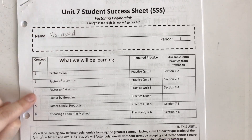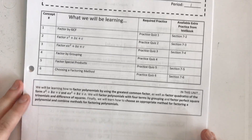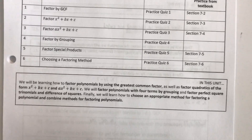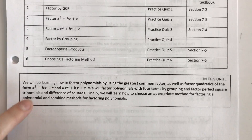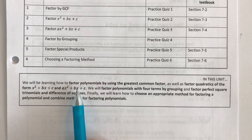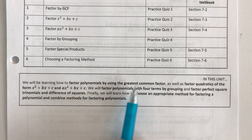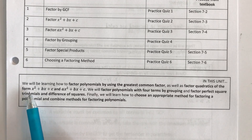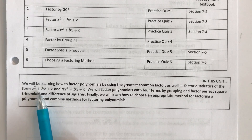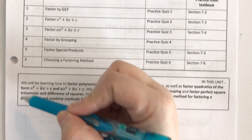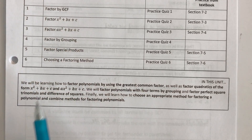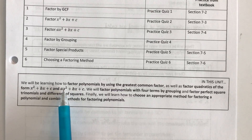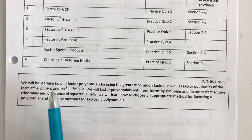There are six concepts in this unit. We'll be learning how to factor polynomials by using the greatest common factor, as well as factor quadratics of the form x squared plus bx plus c, where the leading coefficient is 1, and ax squared plus bx plus c, where that leading coefficient is not 1 — it's 2, 3, 4, whatever.